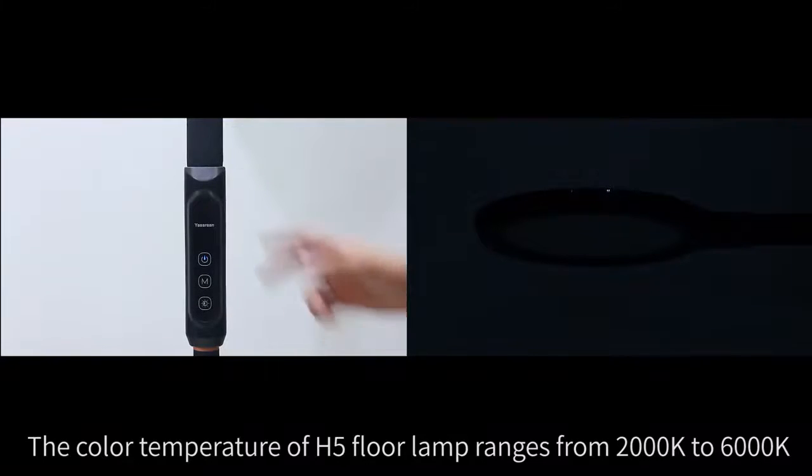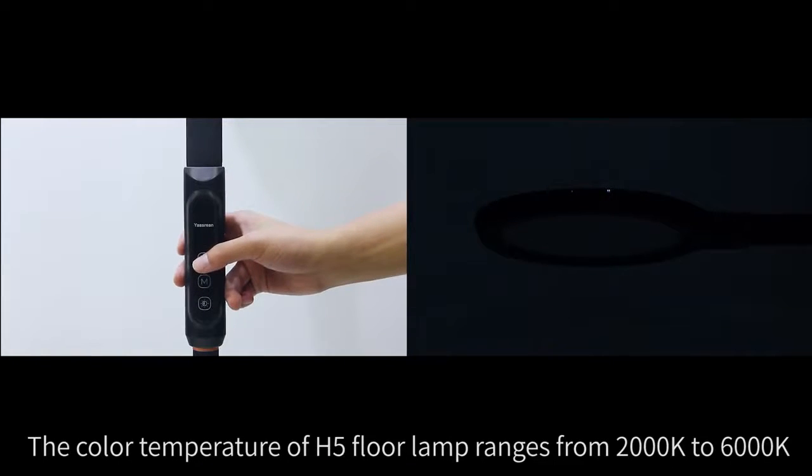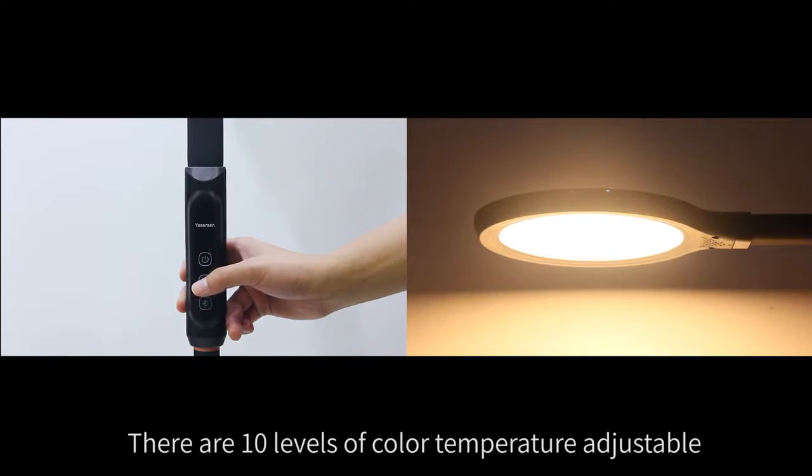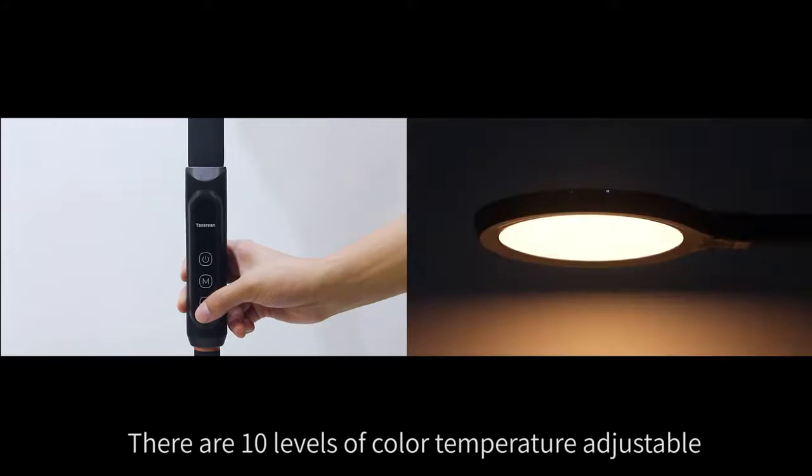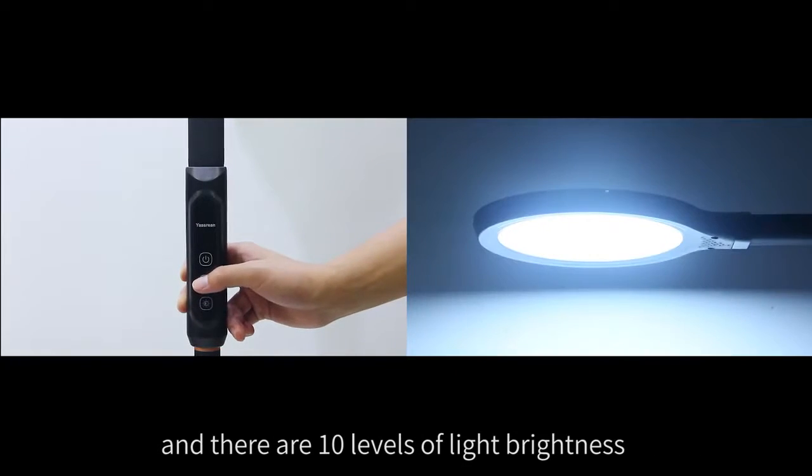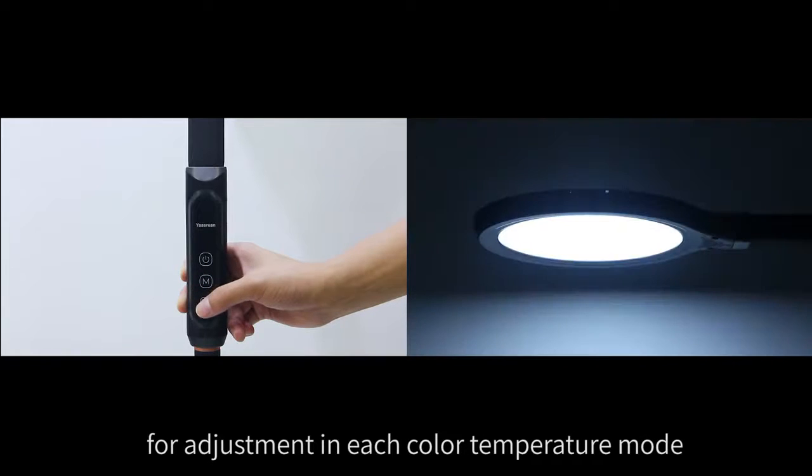The color temperature of the H5 floor lamp ranges from 2000K to 6000K. There are 10 levels of color temperature adjustable, and there are 10 levels of light brightness for adjustment in each color temperature mode.